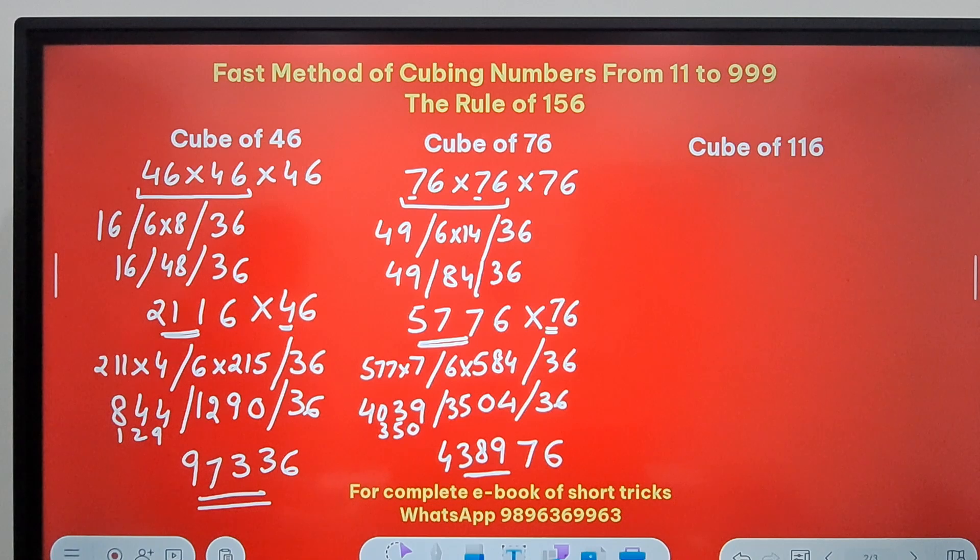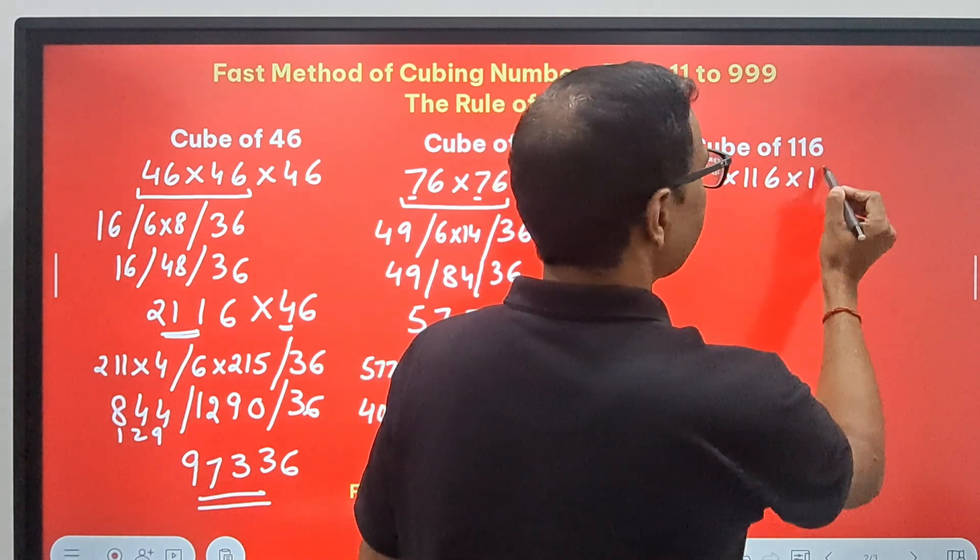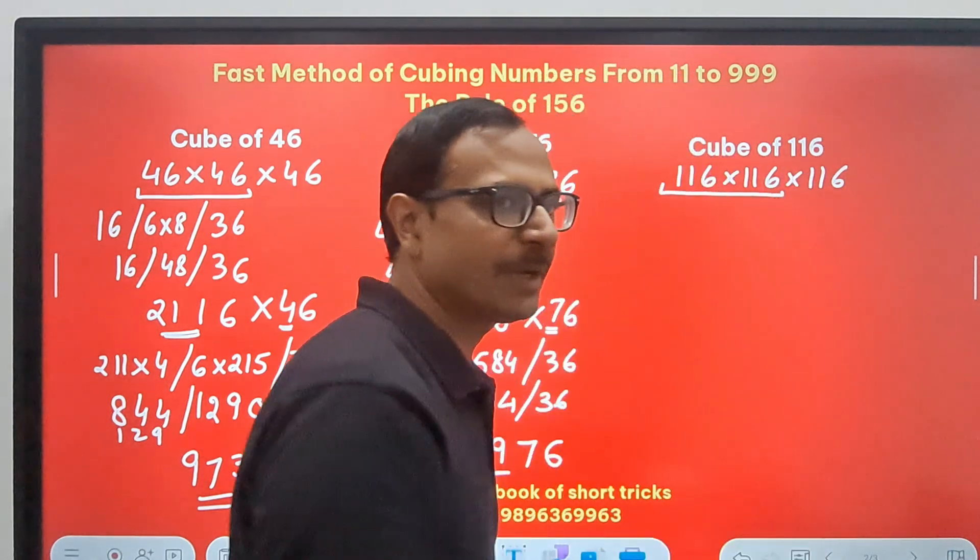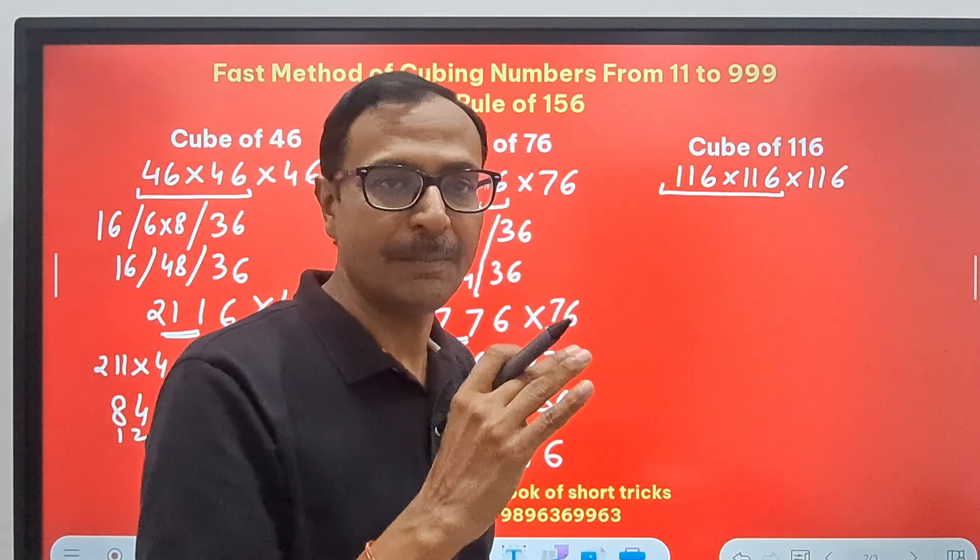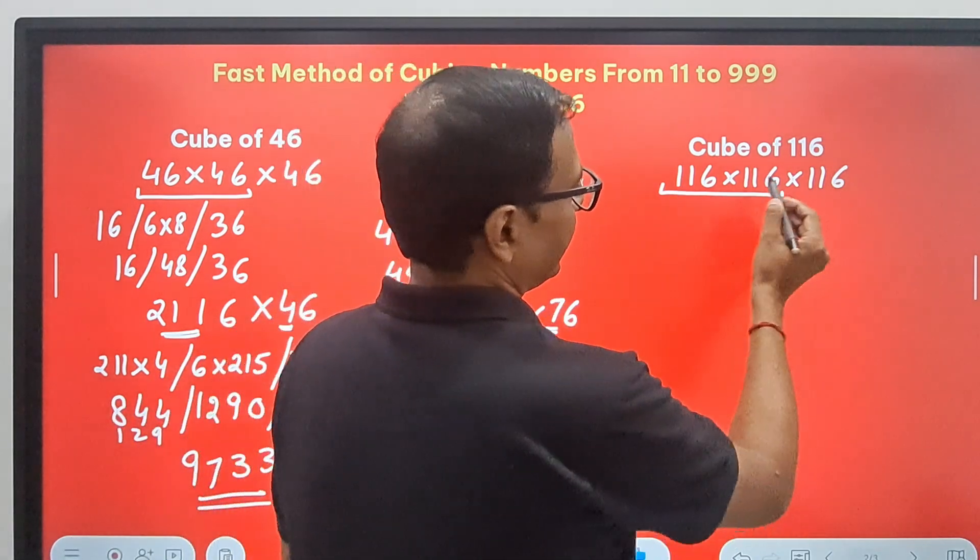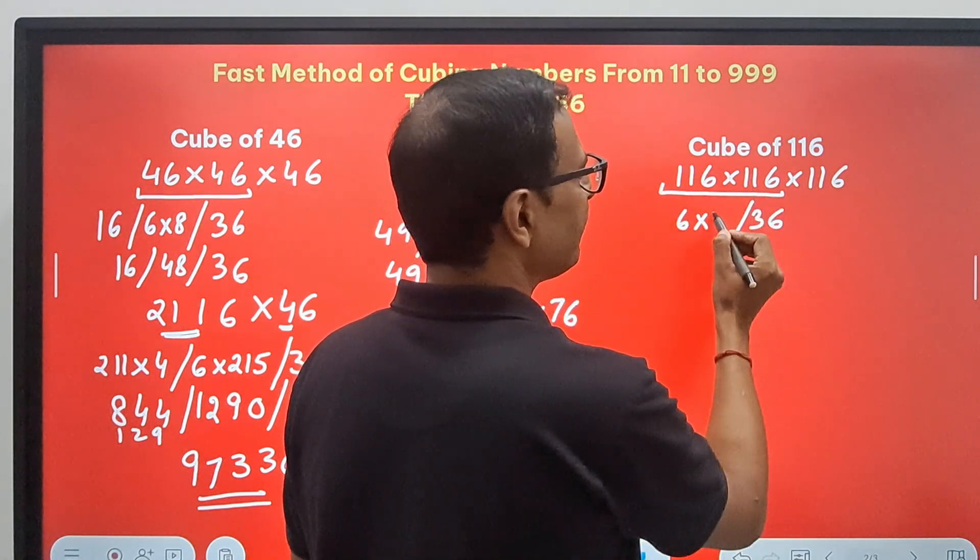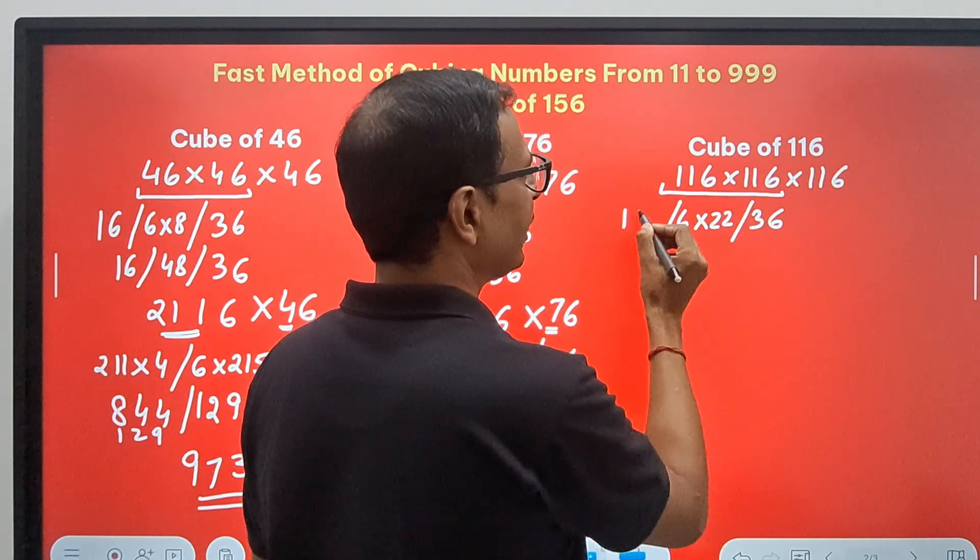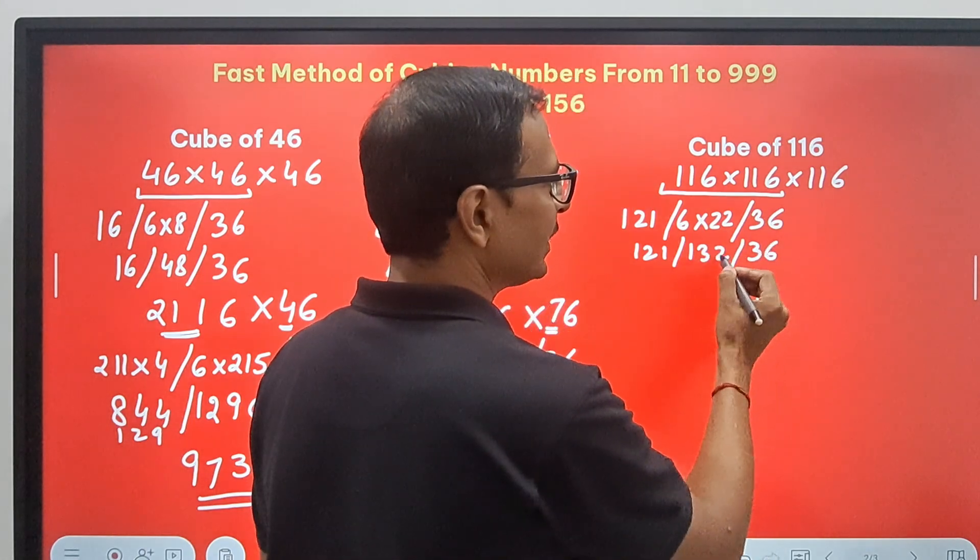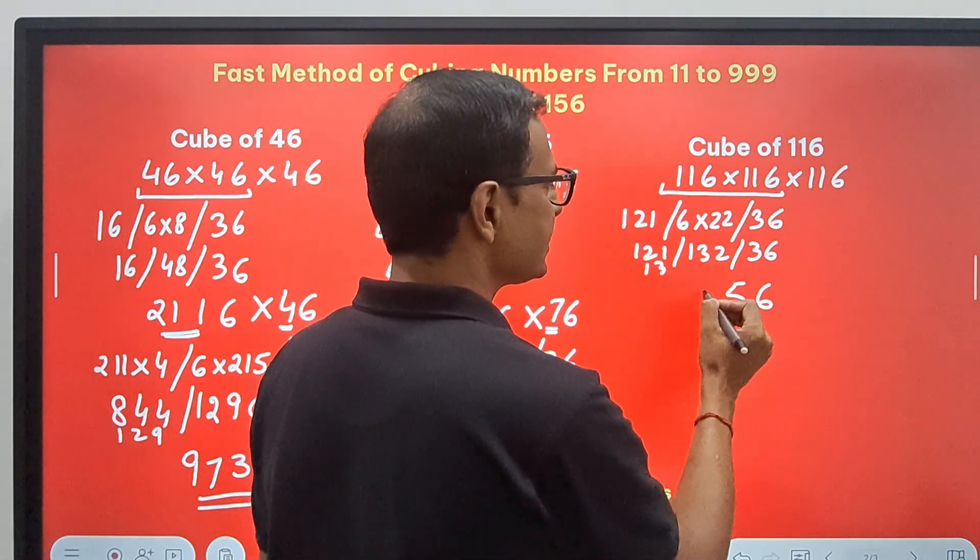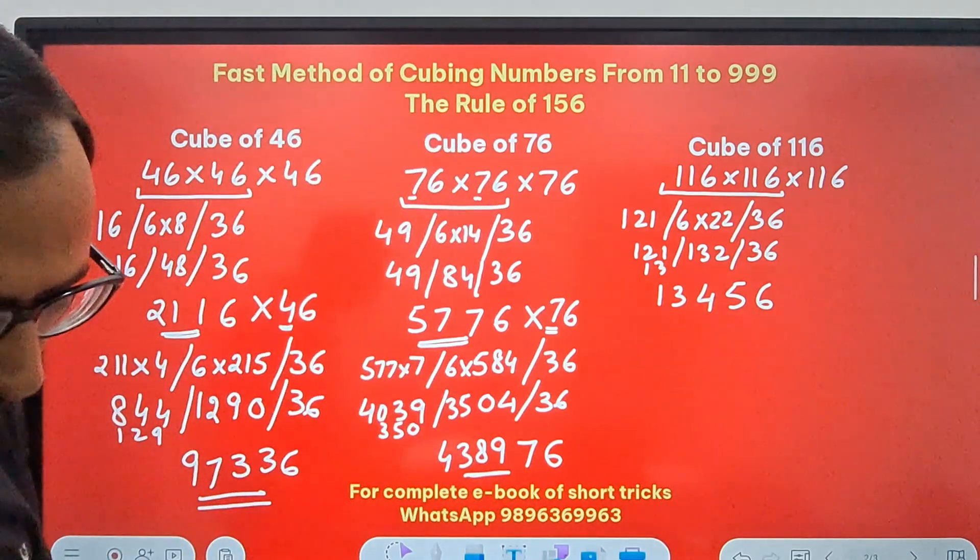Likewise, we can go for 116 cube. So 116 times 116 times 116. Now take, see it's a 3-digit number now, so it's a bigger challenge. Here we have to write 36. And then 6 times what? 6 times 11 plus 11, 22. And then 11 into 11, 121. So 121, 132 and 36. So 6 comes in, 3 means 135, 5, 13 here, and so this gives me 4, 3 and 1. 1, 3, 4, 5, 6. That is the square of 116.